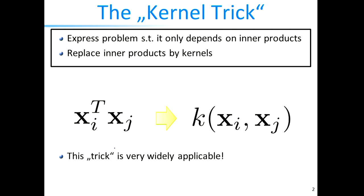We've talked about the kernel trick, which is basically taking a linear algorithm — like linear regression, the perceptron, or support vector machines — and reformulating it so that data points only appear in terms of inner products, then replacing those inner products with a function k that computes the inner product in the transformed space.